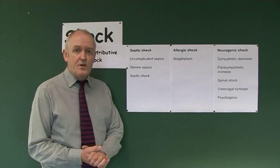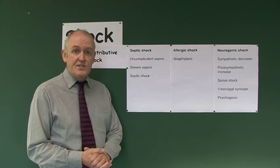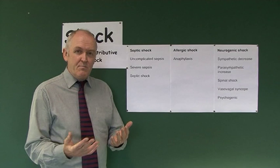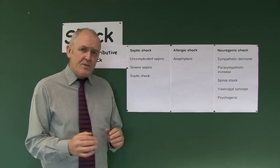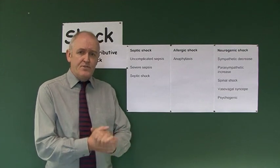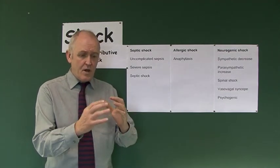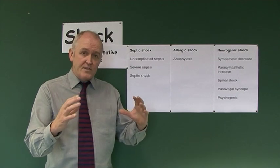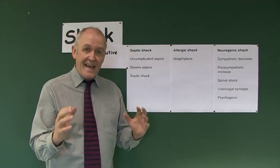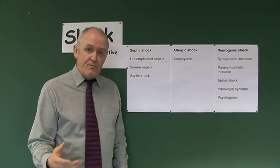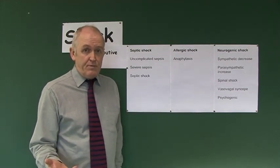The next classifications of shock are sometimes described as distributive shock, meaning the blood is in the wrong place. The common feature of these three types of shock is that there is a loss of vasomotor tone and a peripheral vasodilation. The peripheral vessels are allowed to relax, which reduces peripheral resistance and of course reduces blood pressure.